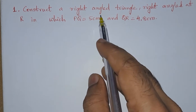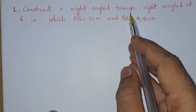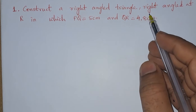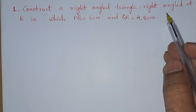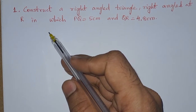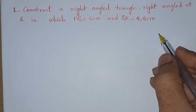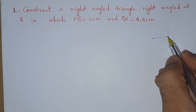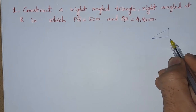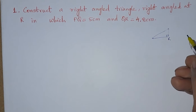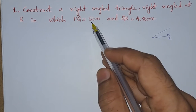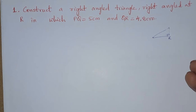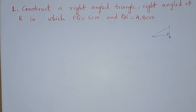First problem: construct a right-angled triangle. We need to construct a triangle that will be right-angled at R — that means the right angle should be at R — in which PQ is equals to 5 centimeter and QR is equals to 4.8 centimeter.